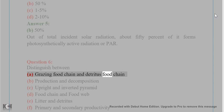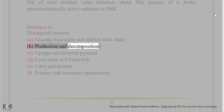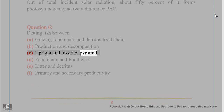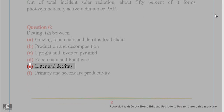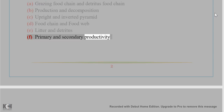Question 6: Distinguish between (A) grazing food chain and detritus food chain, (B) production and decomposition, (C) upright and inverted pyramid, (D) food chain and food web, (E) litter and detritus, (F) primary and secondary productivity.